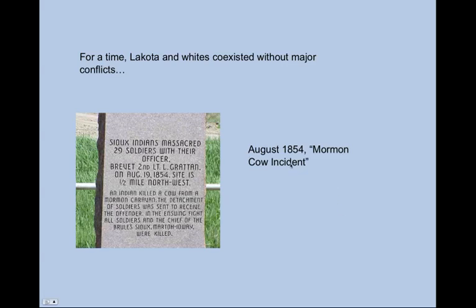What historians call the Mormon cow incident in August of 1854 saw a company of U.S. Army soldiers sent to a Lakota site — a sub-branch known as the Brule — where a dispute over a stolen cow from a settler train of Mormon pioneers led to an armed confrontation. Soldiers under U.S. Army Lieutenant Grattan ended up firing on a village of Brule Sioux. In retaliation, the Brule rushed the soldiers after their first volley, got the upper hand quickly, and killed not only Lieutenant Grattan but all of his soldiers.